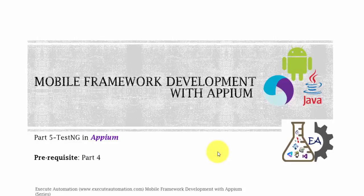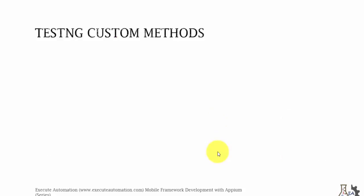Hey, hello guys, this is Karthik from executeautomation.com and this is Part 5 of our mobile framework development with Appium video series. In this part we're going to talk about TestNG in Appium. This part is a continuation of Part 4, where we discussed how to perform a TestNG execution for multiple methods and created a custom TestNG XML file. Now in this part we're going to create a custom TestNG XML file not manually but with code.